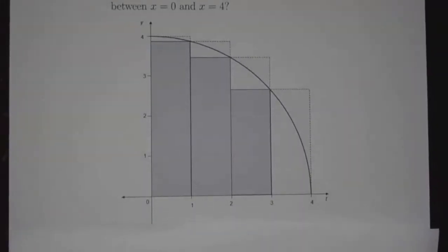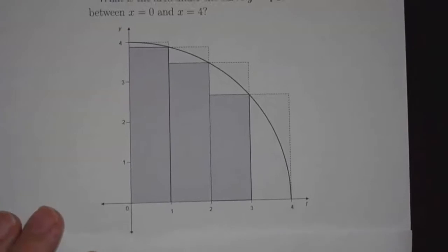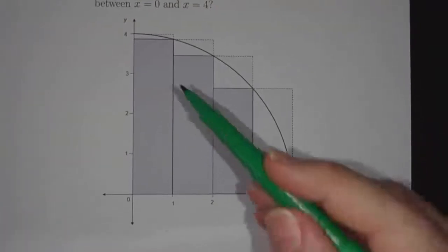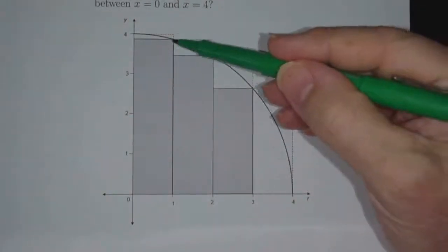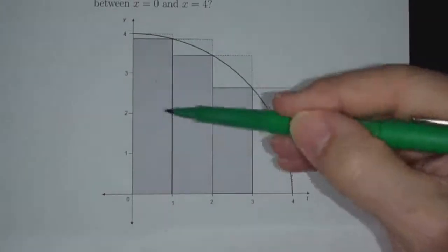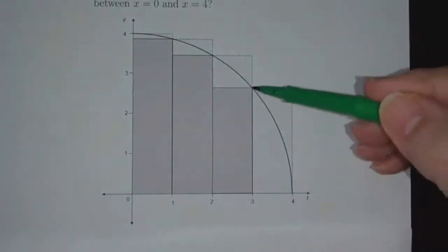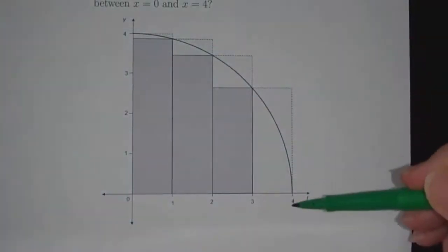There's a picture of it. We can do the exact same strategy. We divide the region into four strips: the strip between 0 and 1, 1 and 2, 2 and 3, and 3 and 4.